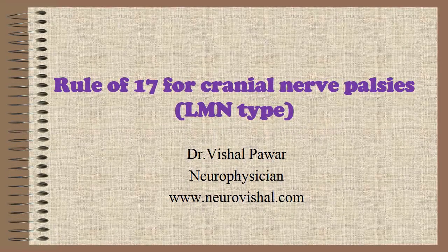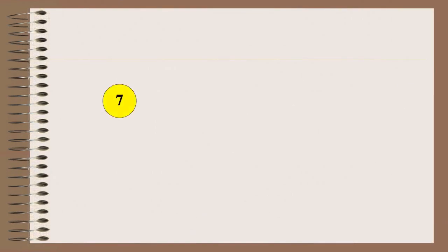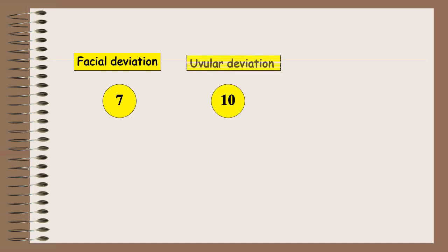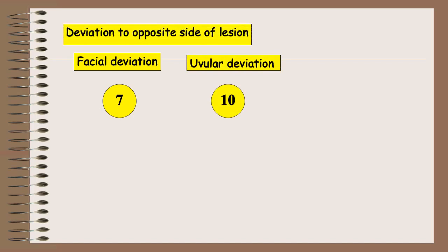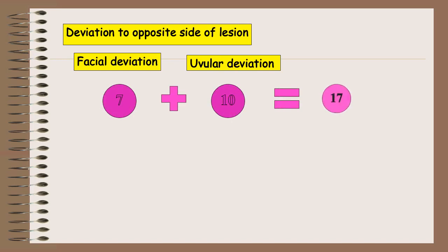In this video I am going to discuss about the rule of 17 for cranial nerve palsies. In lower motor neuron 7th nerve palsy or facial nerve palsy, the facial deviation occurs to the opposite side of the lesion. And in 10th nerve palsy or vagus nerve palsy, the uvular deviation also occurs towards the opposite side of the lesion. So 7 plus 10 is equal to 17.